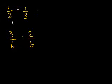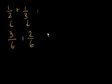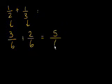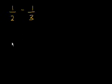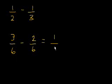So 1/2 plus 1/3 is the same as 3/6 plus 2/6. All I did is rewrite both fractions with a common denominator. Now the problem becomes easy: we add the numerators, 3 plus 2 is 5, and keep the denominator the same — so that equals 5/6. And subtraction works the same: 1/2 minus 1/3 equals 3/6 minus 2/6, which equals 1/6.